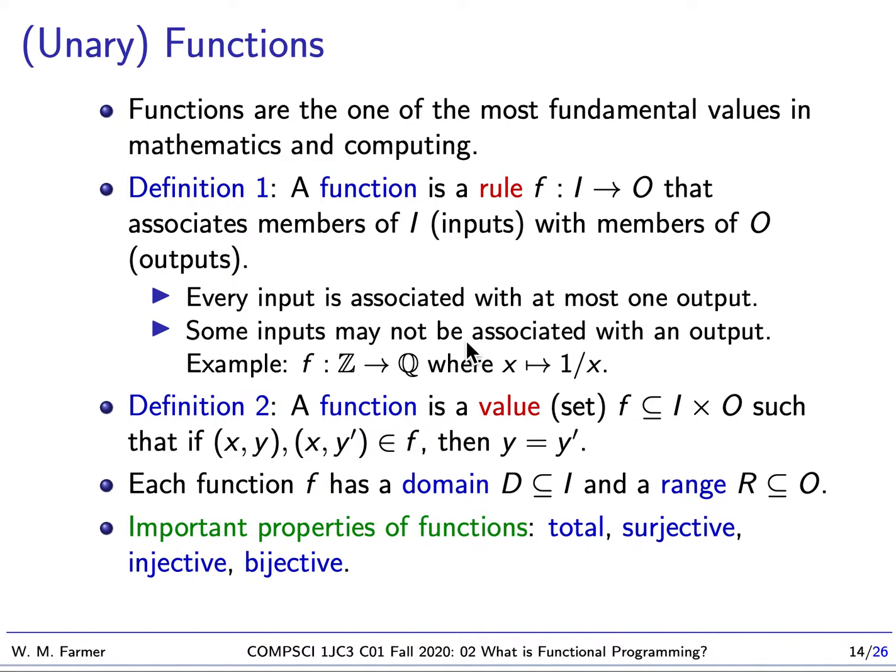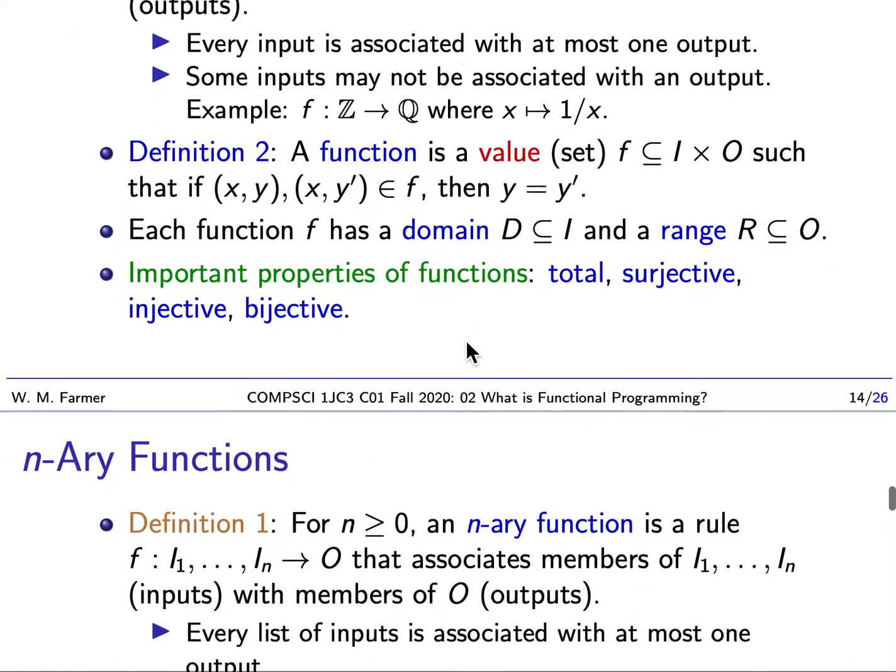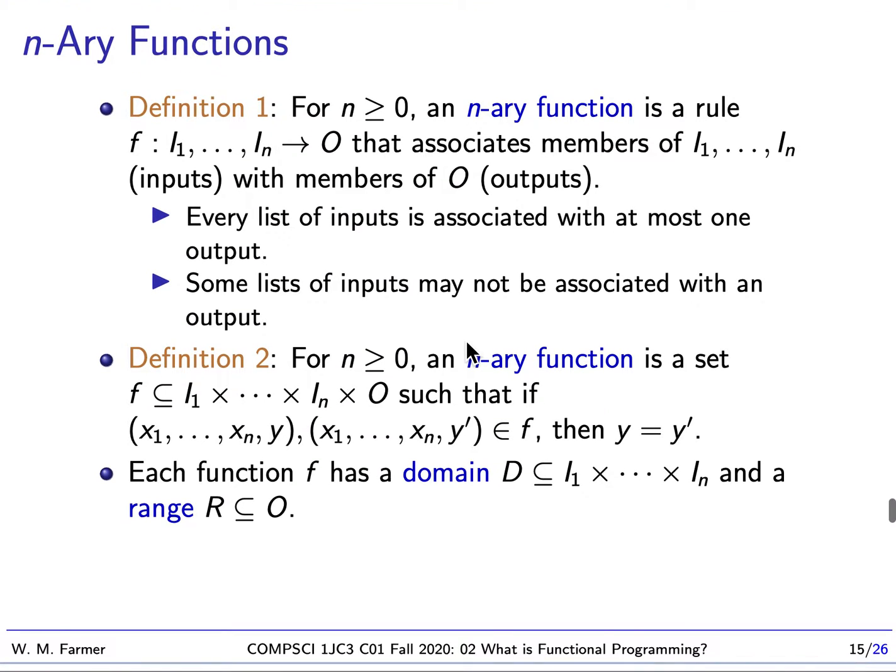Welcome back to McMaster University course Computer Science 1JC3, Introduction to Computational Thinking. Last time we were talking about what a function is. There's two ways of thinking about a function - as a rule and as a value. Unary functions take a single input, but we can also define inary functions that take any number of inputs.